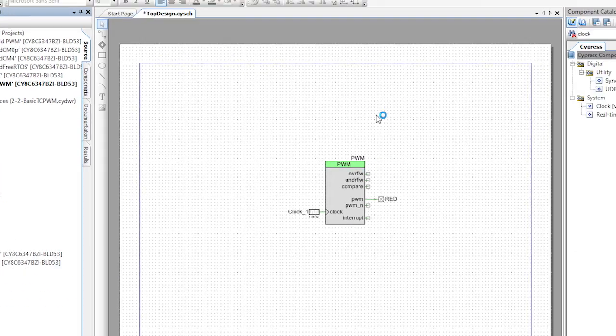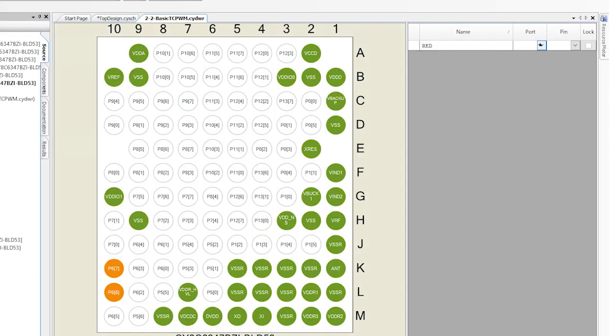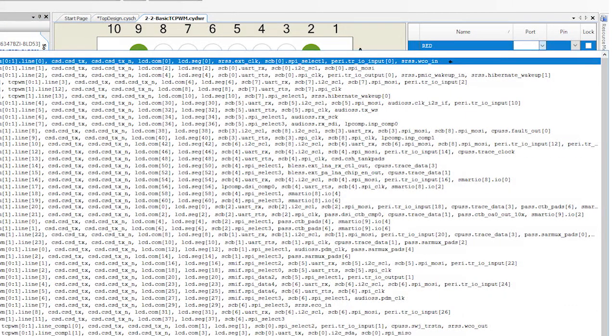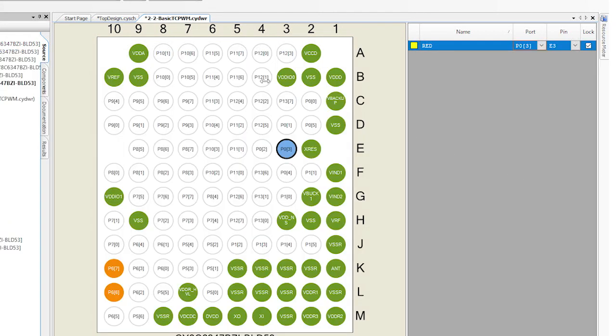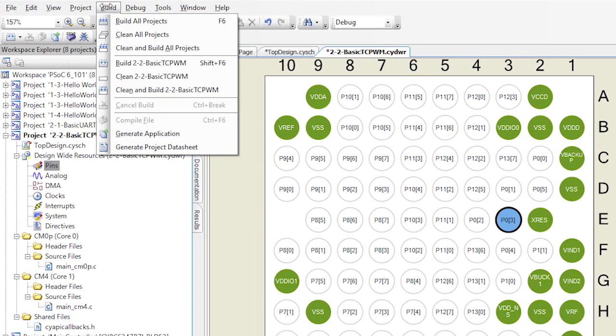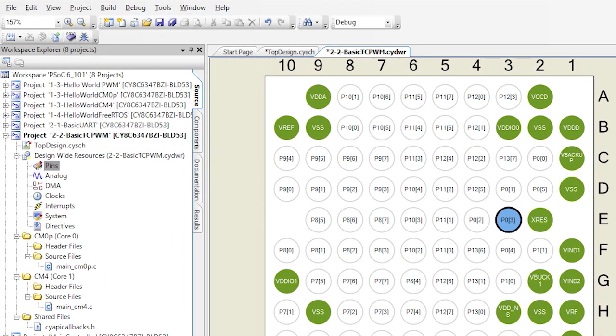Now, assign the pin component to the physical pin on the PSOC6 device. In this case, a red LED is connected to P0_3. It's time to generate the application.